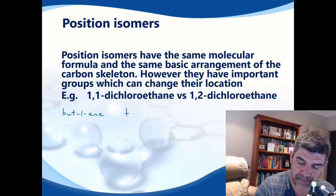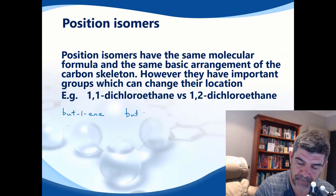So again, I haven't added or subtracted any atoms. I still have four carbons and eight hydrogens, but now the position of the double bond has gone from between the first two carbons to the two middle carbons. So this one would be but-2-ene.